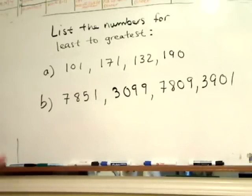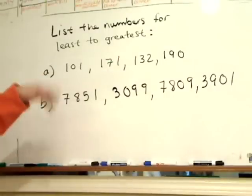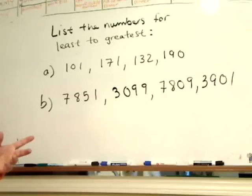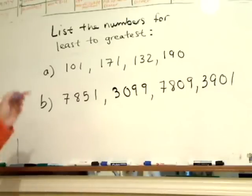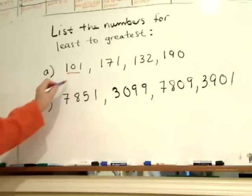This question is quite straightforward because what you want to do is look at the smallest number. Now you have a series of numbers here: 101, 171, 132, 190. Now the best part is, if you say it out loud, you would know which one is the biggest number. If you're just looking at the number, it may not help you, but if you say it and you can hear the number, you probably know which one is the smallest.